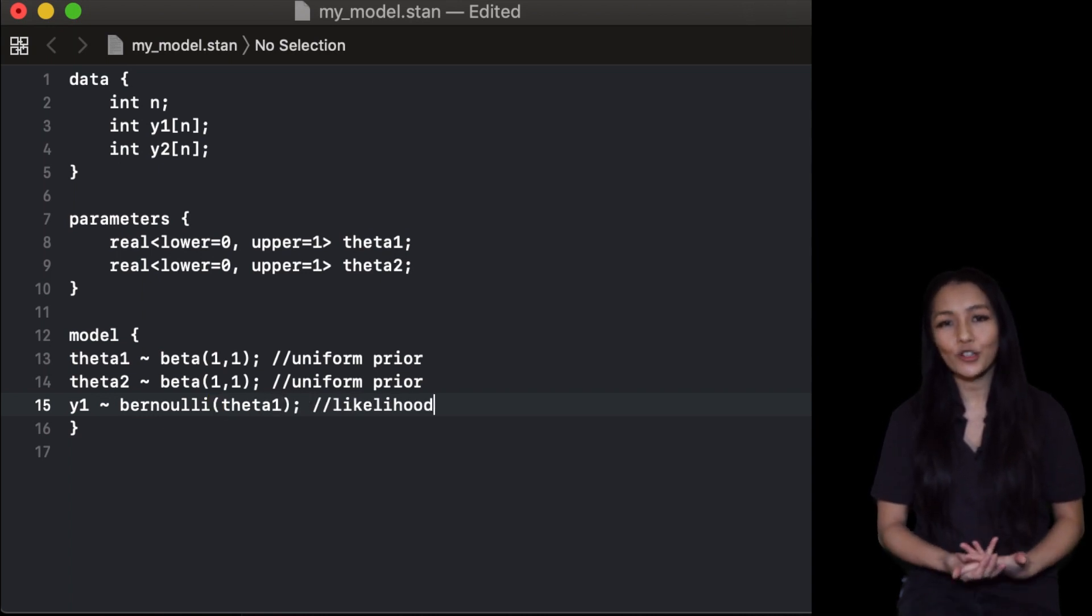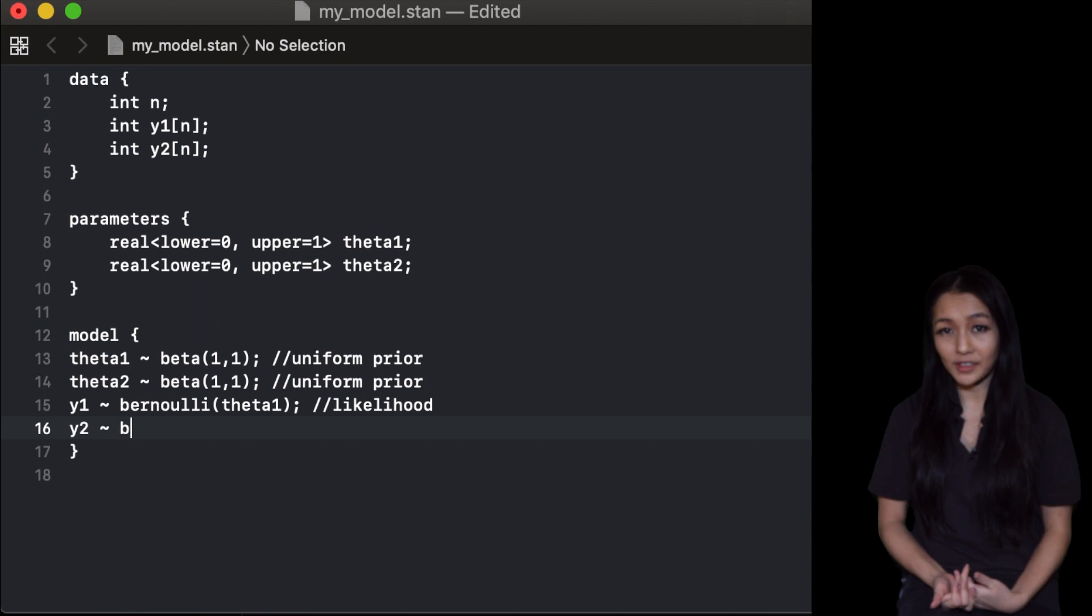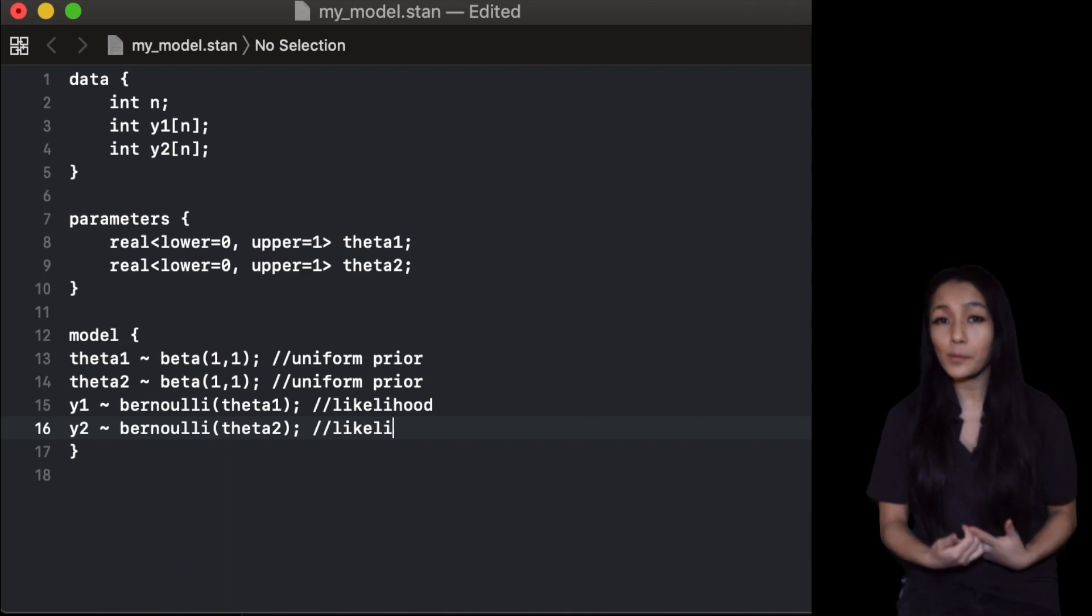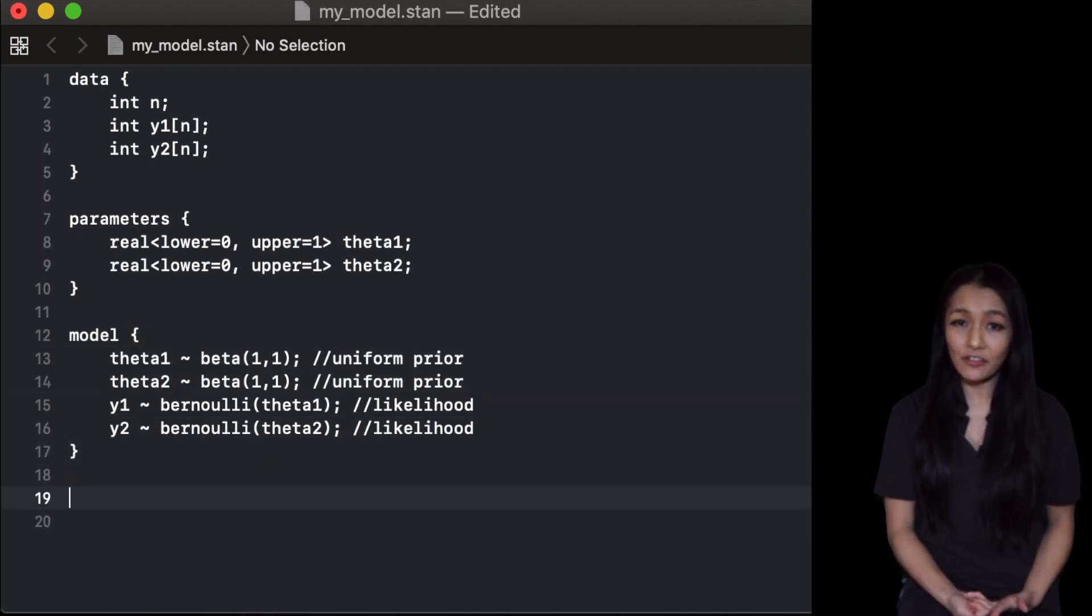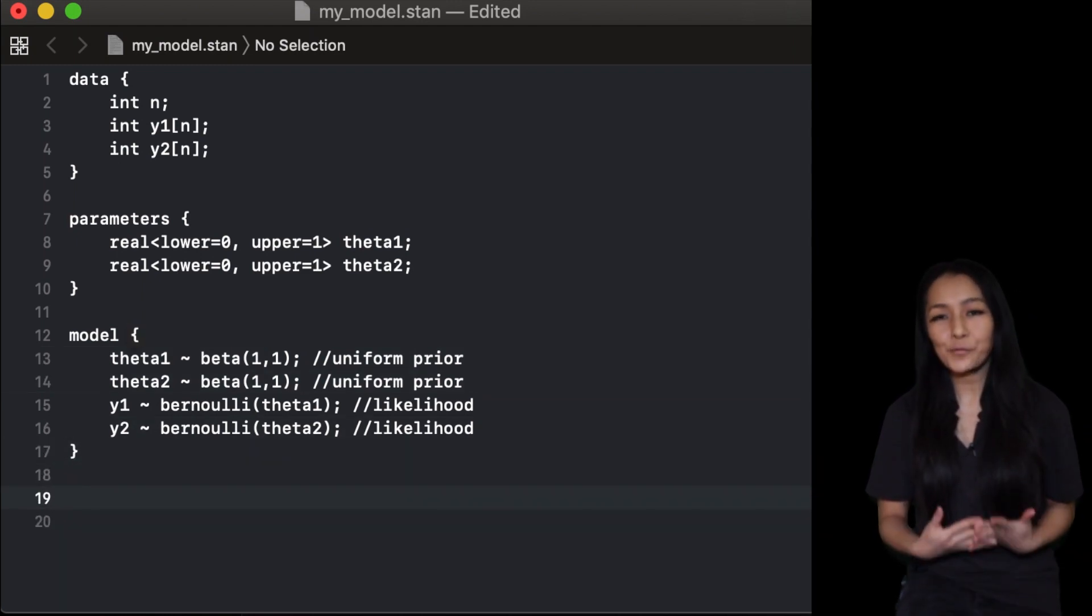Next we need to define the likelihoods. Our data takes values of zero and one, so we will say that the data is drawn from a Bernoulli distribution. This is a special type of binomial distribution which is a discrete probability distribution with variables of value one with probability p and zero otherwise.